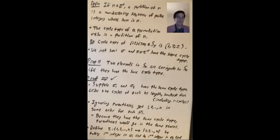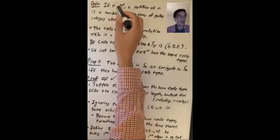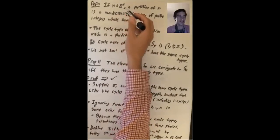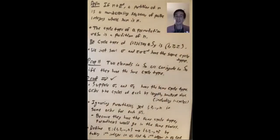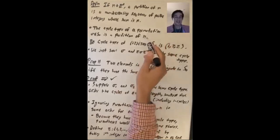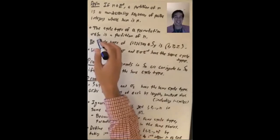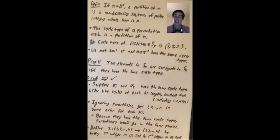One more definition: if n is a positive integer, a partition of n is a non-decreasing sequence of positive integers whose sum is n. The cycle type of a permutation in Sₙ is a partition of n, because every integer is in some cycle and the cycle lengths sum to n. By convention we write the smallest cycles first.